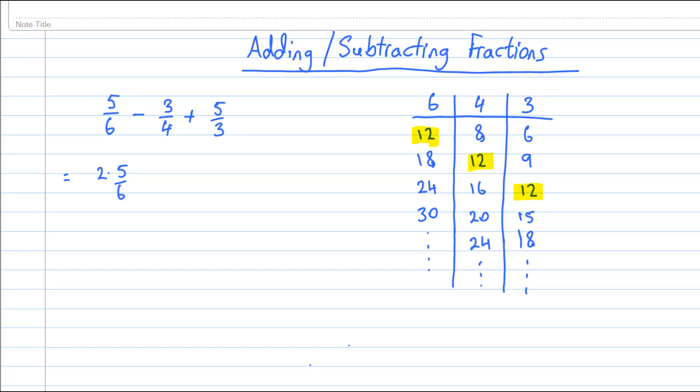In order to turn that 6 into a 12, it needs to be multiplied by 2, so we have to multiply above and below the line by 2. Next, for the 3 over 4, in order to turn the 4 into a 12, we have to multiply by 3, so we multiply above and below by 3 for this fraction.